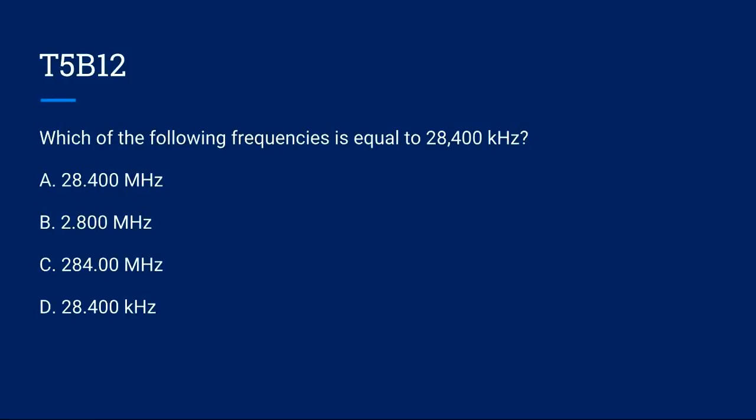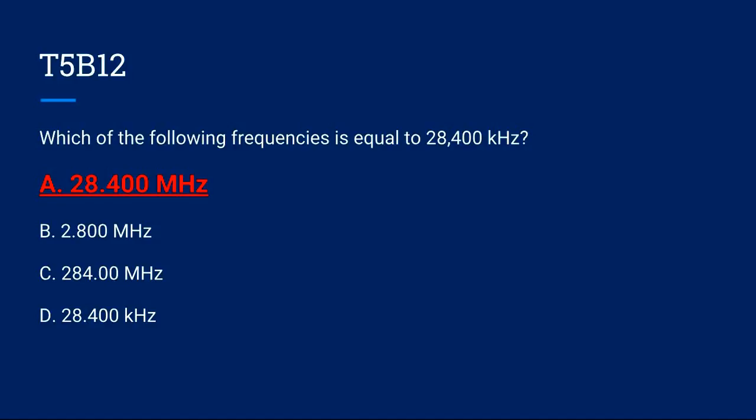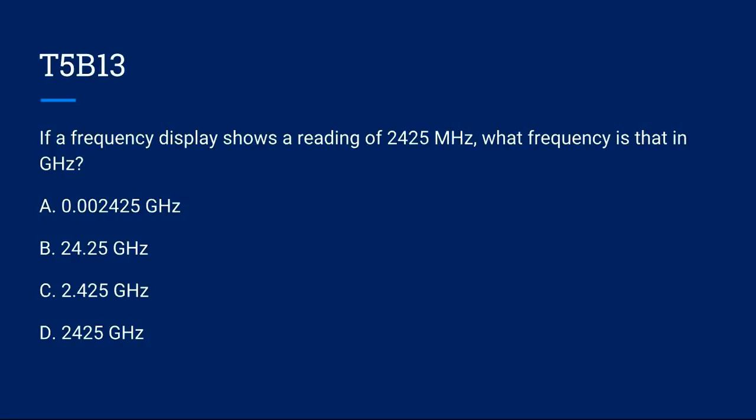T5B12, which of the following frequencies is equal to 28,400 kHz? A. 28.400 MHz. B. 2.800 MHz. C. 284.00 MHz. Or D. 28.400 kHz. The correct answer is A. 28.400 MHz. T5B13, if a frequency displayed showing a reading of 2,425 MHz, what frequency is that in GHz? A. 0.002425 GHz. B. 24.25 GHz. C. 2.425 GHz. Or D. 24.25 GHz. The correct answer is C. 2.425 GHz.